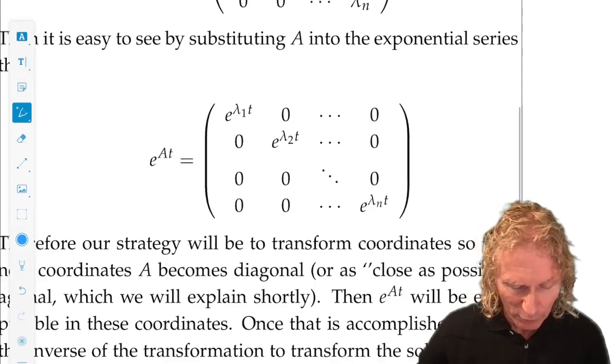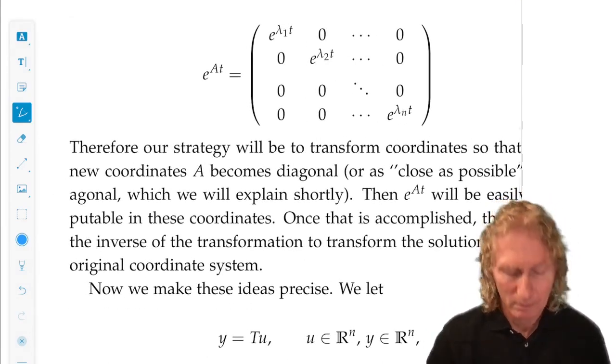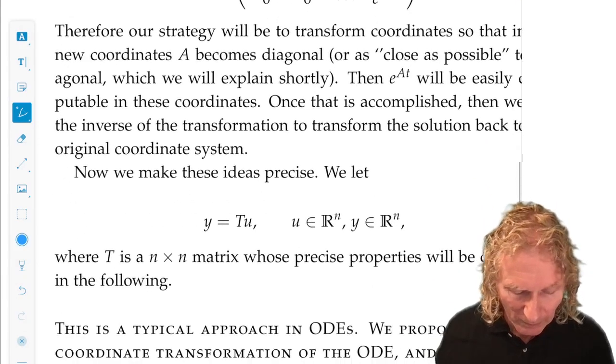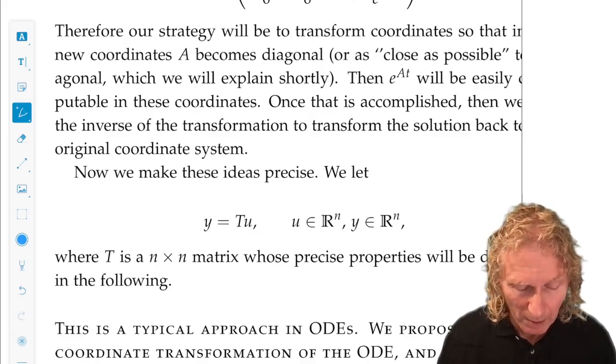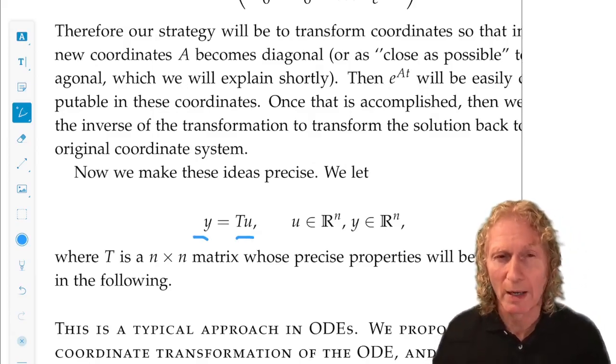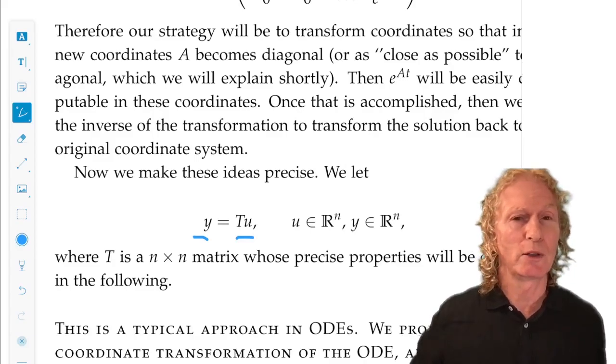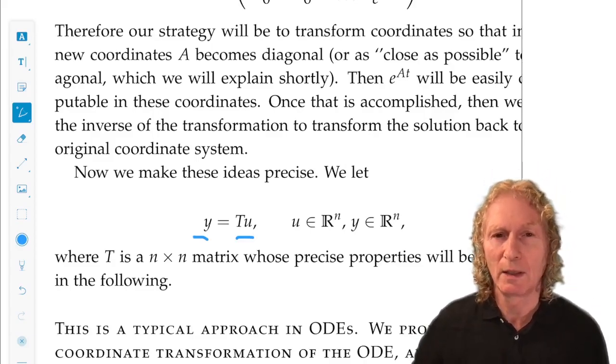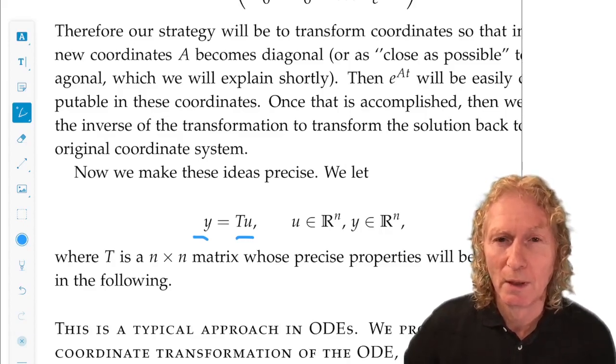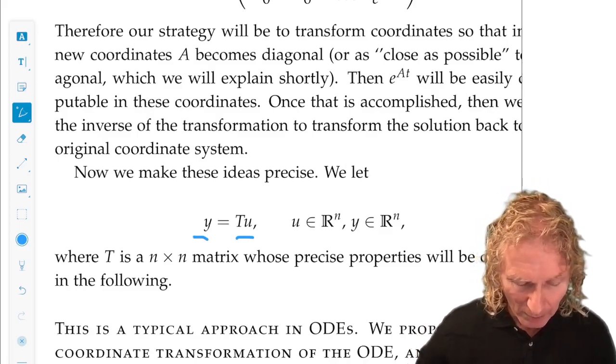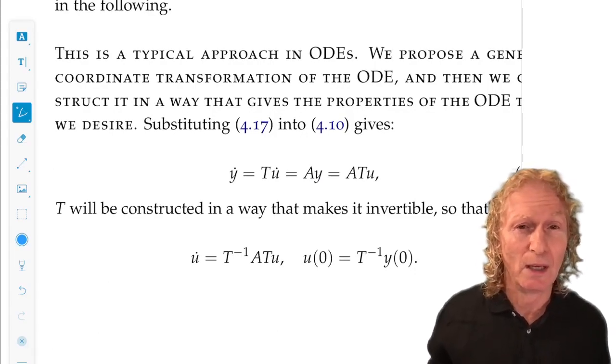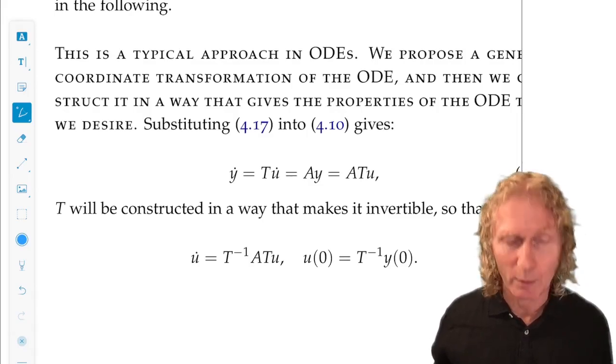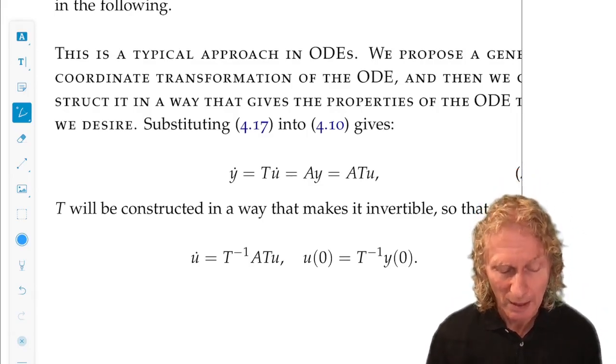Ah, so that gives you a strategy what to do. Let's transform variables at y equal Tu. Y are the variables we're in. T is a transformation. We're going to choose it in a way that does what we want. You'll see what I mean by that. So let's differentiate it. Y dot equals Tu dot. T doesn't depend on time. I didn't put that in as an assumption, but that's the case. T is a constant n by n matrix.